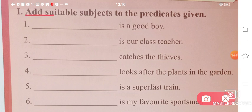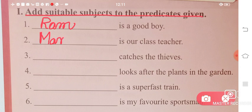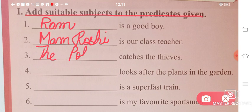Next question: Add suitable subjects to the predicate given. What we're saying is given, you have to add the subject. 'Dash is a good boy' - Ram is a good boy. Number two: 'Dash is our class teacher' - Ma'am Rashi is our class teacher. Number three: 'Dash catches the thieves' - The police catches the thieves, because police catch thieves. Number four: 'Dash looks after the plants in the garden' - A gardener. A gardener is the person who takes care of plants.